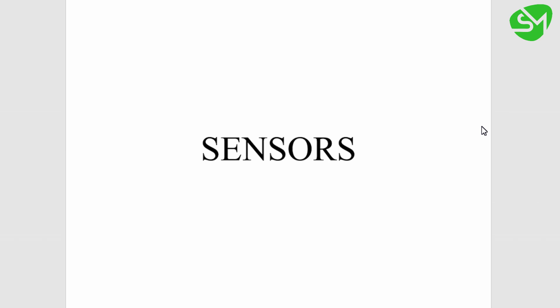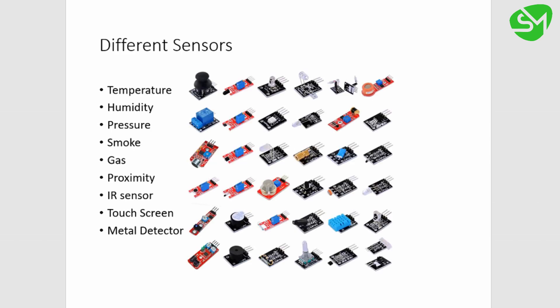So what is a sensor? Sensors are tiny components used for converting any physical parameters into electric signals. The different types of sensors are temperature, humidity, pressure, smoke, gas, proximity, IR, touch screen, and metal detector. The parameters may vary but the main purpose of a sensor is the same.